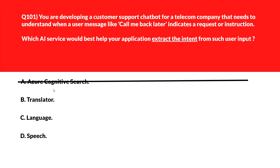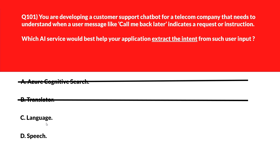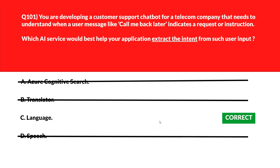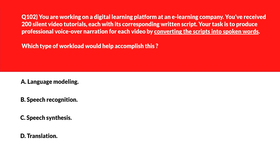Option C says Language — Language is designed to extract meaning, detect intent, and classify user input using natural language understanding, so let's keep this. Option D says Speech — Speech converts spoken words into text but doesn't analyze the intent of what was said, so speech is out. Looking at the official documentation, Language features are utilized in agent templates: the intent routing agent detects user intent and provides exact answers. We'll lock option C, Language, as the right answer.